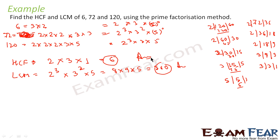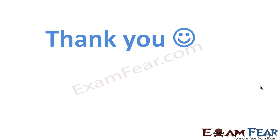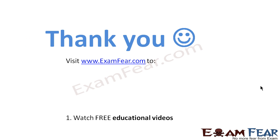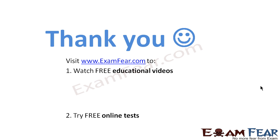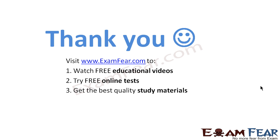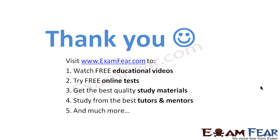So our LCM is 360 and HCF is 6 — that is our answer. We found the prime factorization of 72 and 120; for HCF we found the highest common factors (2 and 3) and multiplied to get 6; for LCM we found the least common multiples (2 cubed, 3 squared, and 5) and multiplied to get 360. Thank you. Visit examfear.com to watch free educational videos, try free online tests, get the best quality study materials, and study from the best tutors and mentors.